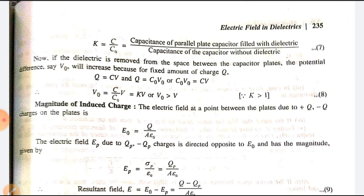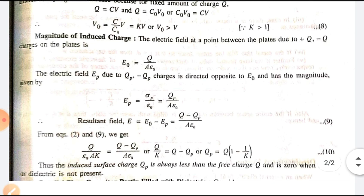To calculate the magnitude of the induced charge: the electric field at a point between the plates due to plus Q and minus Q charges is E₀ = Q/(Aε₀). The electric field Ep due to charges QP and minus QP is directed opposite to E₀ with magnitude Ep = QP/(Aε₀). The resultant field E = E₀ − Ep = (Q − QP)/(Aε₀). From equations 2 and 9, Q/(ε₀AK) = (Q − QP)/(Aε₀), giving Q/K = Q − QP, or QP = Q(1 − 1/K). Thus the induced surface charge QP is always less than Q and equals zero when K = 1, meaning no dielectric is present.